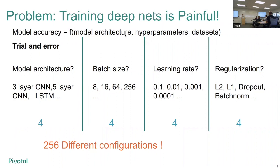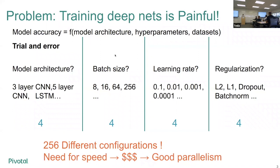So we are in need of speed because we have so many models to train. The most obvious solution is money — you buy more machines and throw more computational power at the problem. But then how do we utilize those machines? That brings our motivation for good parallelism to utilize these computational resources as well as possible.